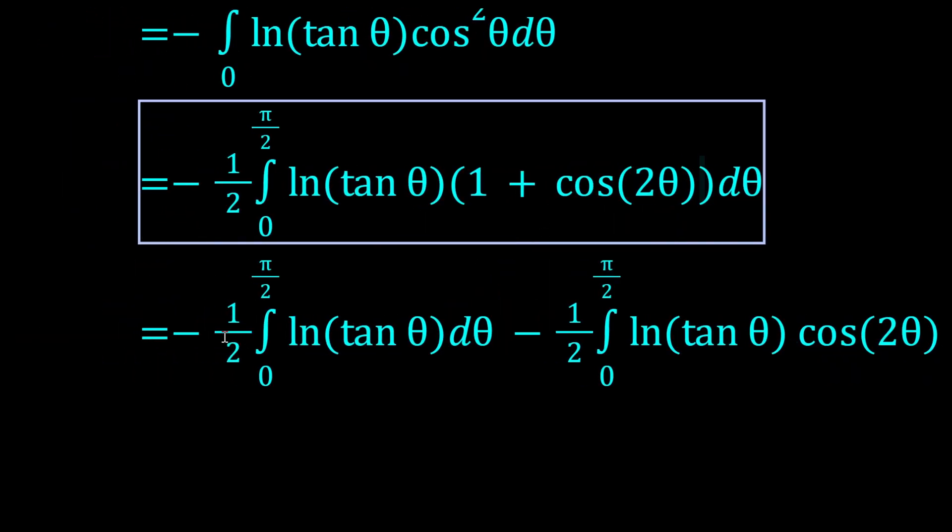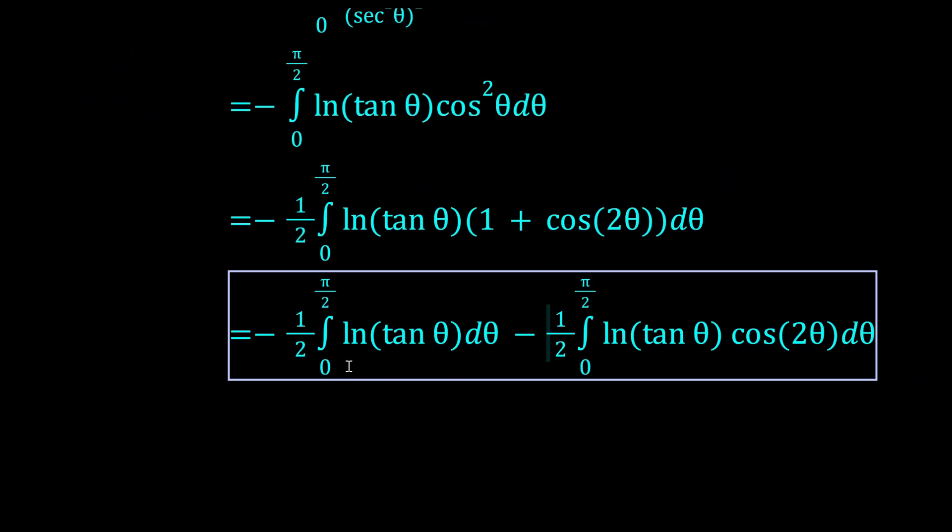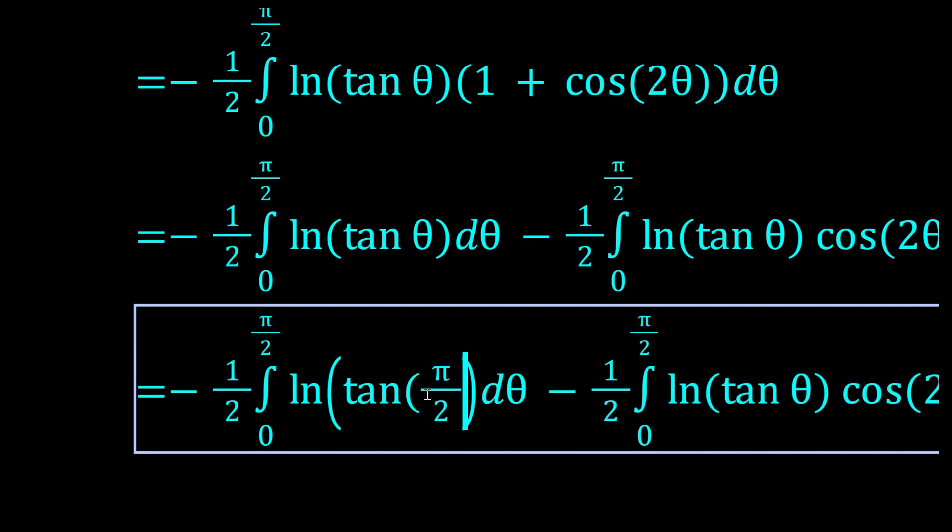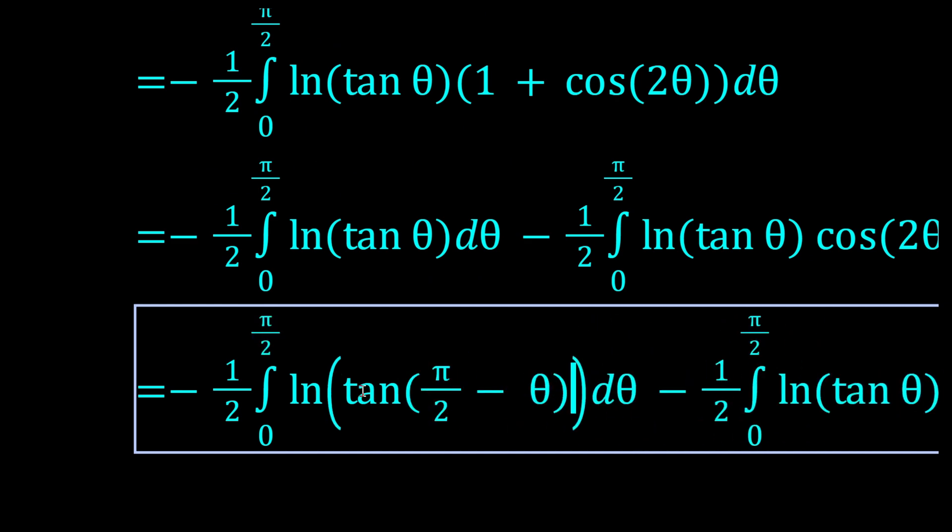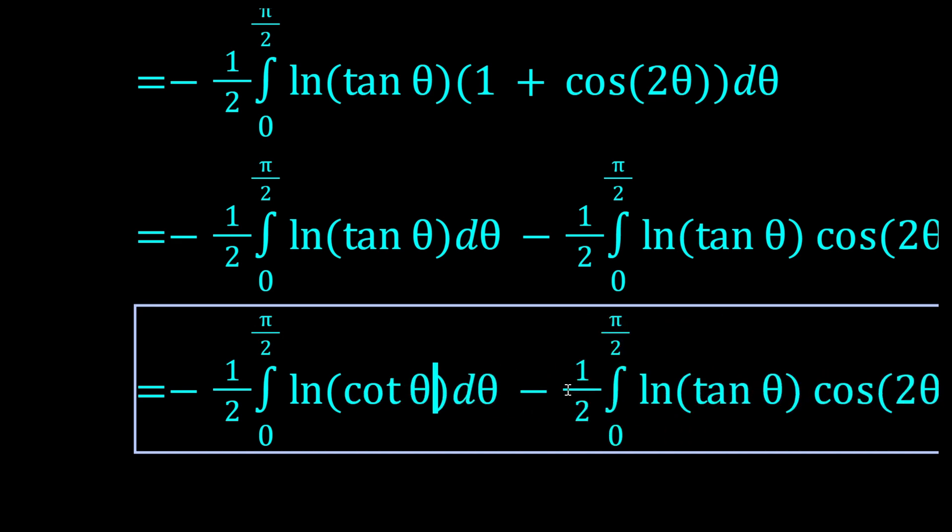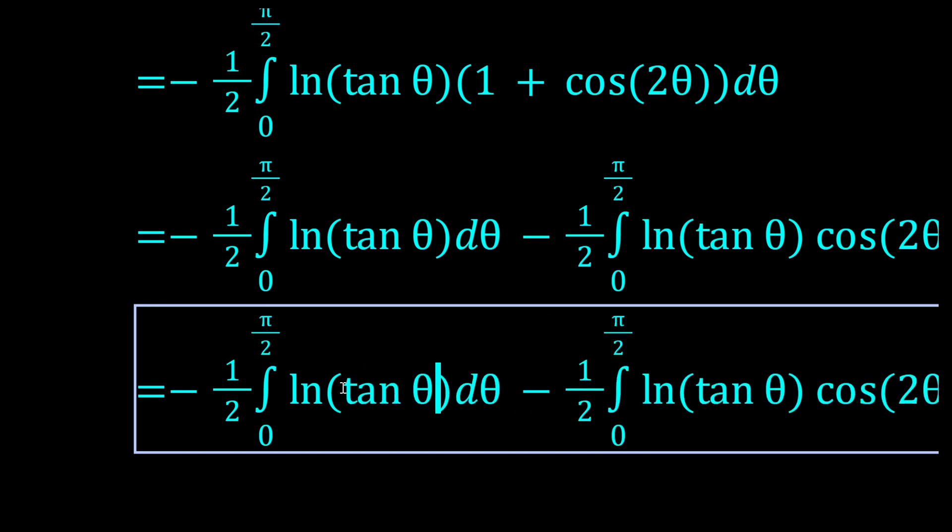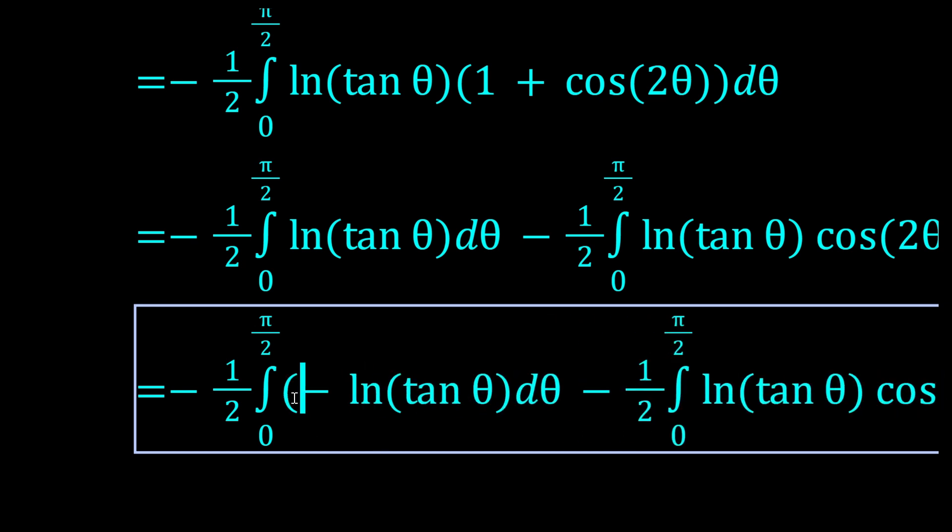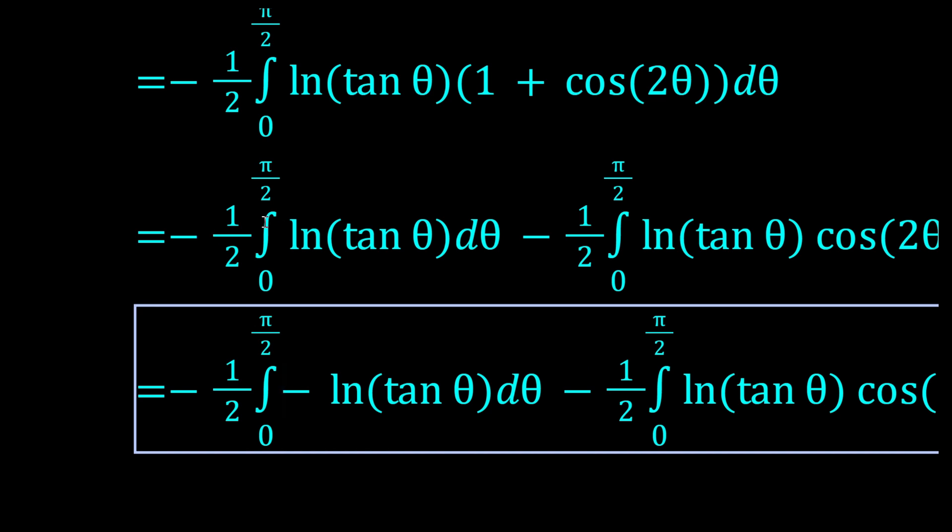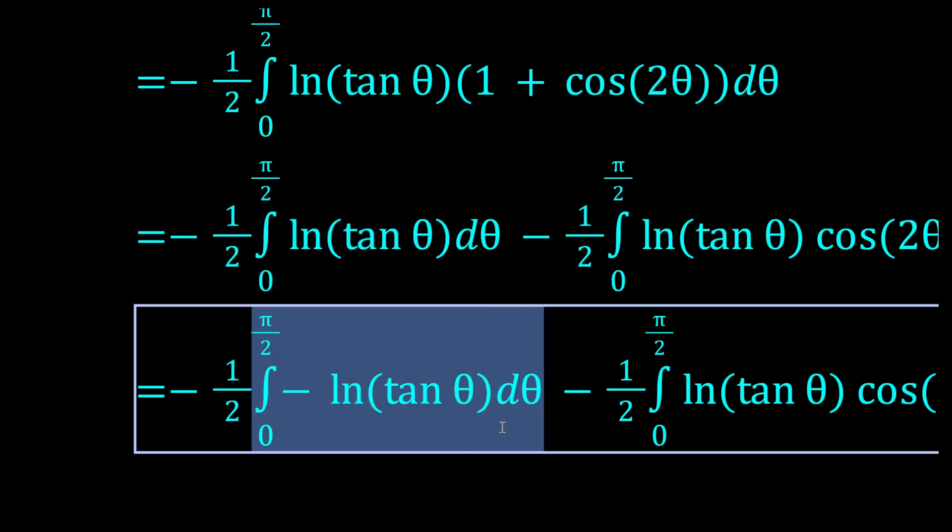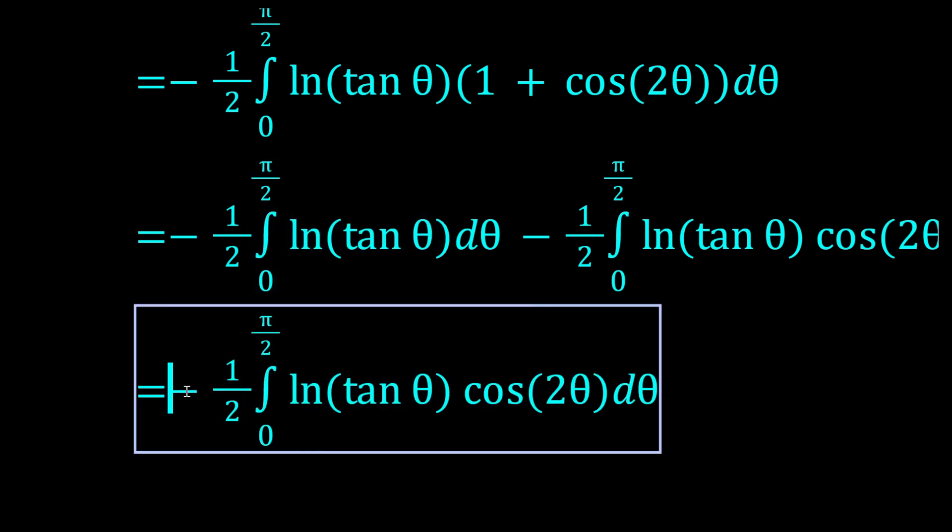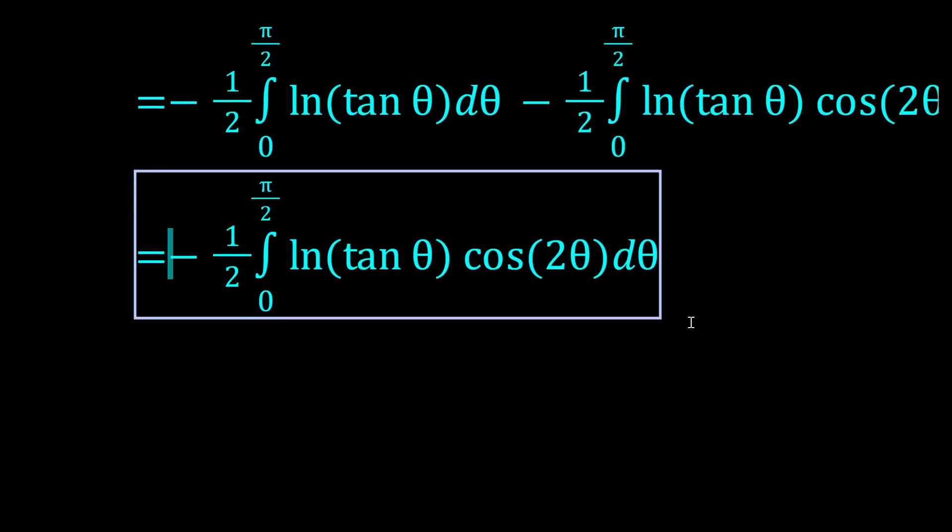It's the integral of log tan, and we can actually do King's rule on this, because the bounds are 0 to something. Tan(π/2 - θ) is just cot θ. Right, so cot θ is 1/tan θ, and when you have log(1/something), it's just log of that something, but with a negative sign. So this integral is equal to its own negative. That means it has to be 0, so that's pretty good. We just got rid of a full integral.